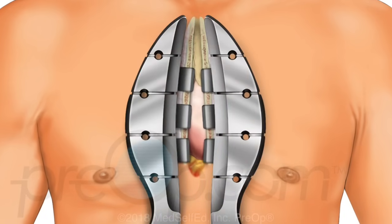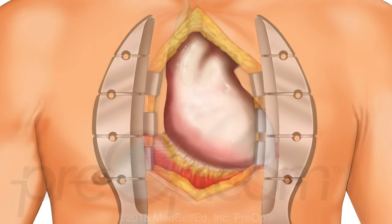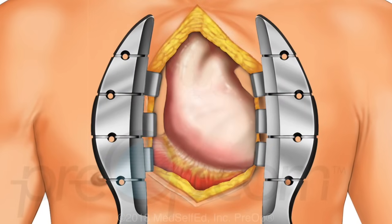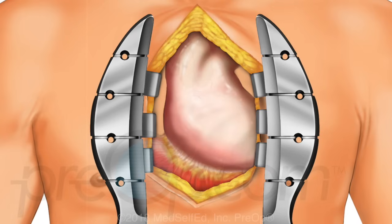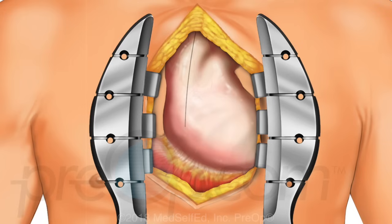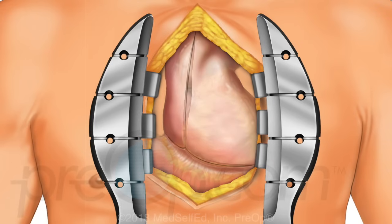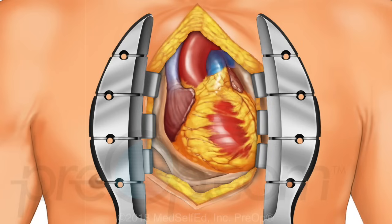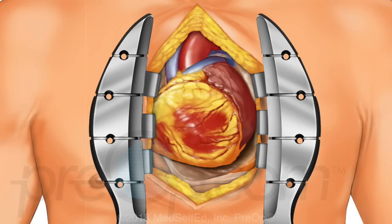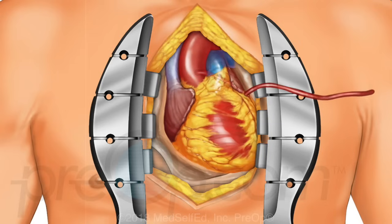A retractor is then placed to hold the edges apart, creating a working area. The protective sac that surrounds the heart, called the pericardium, is opened. The surgeon inspects the heart and identifies the vessels to be bypassed. The intended grafts are stitched into place as needed to complete the necessary bypasses.